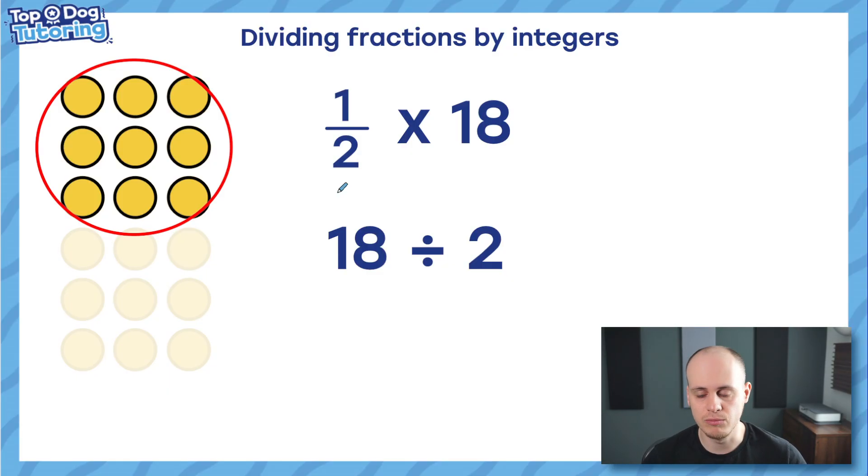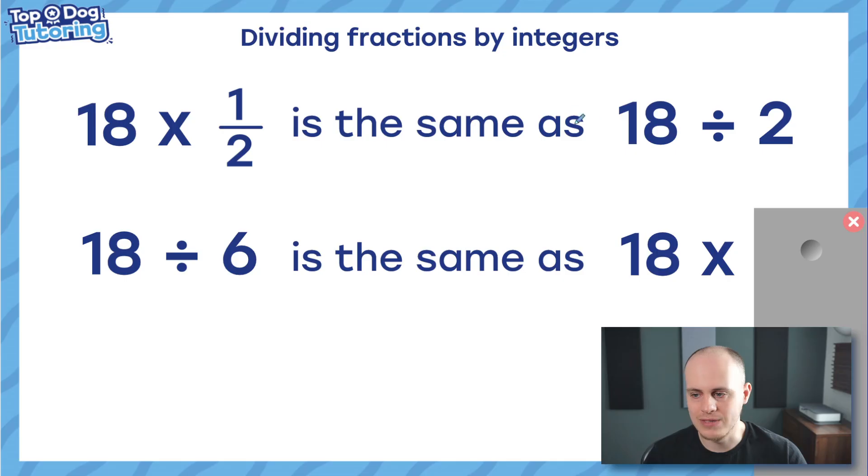So earlier on, we established this, didn't we? We established that half of 18 or 18 times a half, however you say it, is the same as just dividing 18 by 2. So there's a really interesting link there. Is that random, do you think? Do you think that 2 was just a coincidence? I don't know. Let's have a look. 18 times a half is the same as 18 divided by 2. It's not a coincidence. So using the same logic, what do you reckon 18 divided by 6 is the same as timesing by? It is a fraction. So 18 divided by 2 was the same as timesing by a half. 18 divided by 6 is the same as timesing by a sixth.